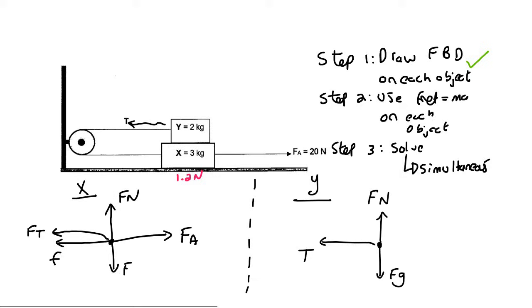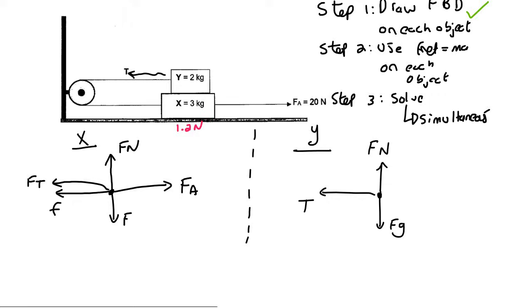Now going into step two, we have to use F net equals to ma. To do that you need to have an overall idea of what the system is doing. We know that this block is going in this direction, and we know that this block over here is going to move in that direction.